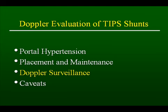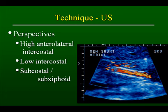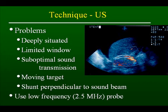Let's talk about some principles of Doppler surveillance. TIPS shunts are not always the easiest things to monitor. Either the high anterolateral intercostal approach, the low intercostal approach, or the subcostal subxiphoid approach should demonstrate the length of the shunt. These shunts tend to be deeply situated, so we are imaging at considerable depth. There is often a limited window, suboptimal sound transmission as the cirrhosis itself causes sound attenuation, and often a moving target because many patients are unable to hold their breath adequately. Also, the orientation of the shunt relative to the sound beam is often perpendicular, which limits the Doppler signal that can be obtained.